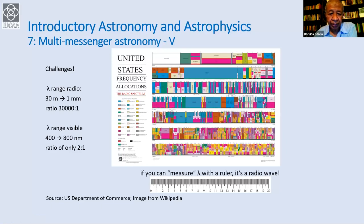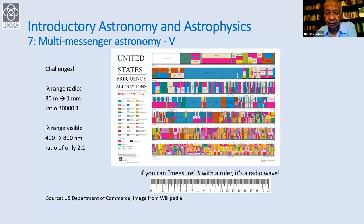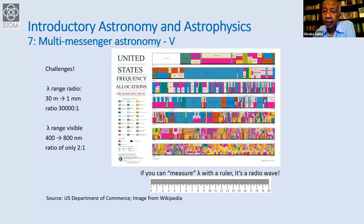This United States frequency allocations chart shows that almost everything is filled up for a variety of needs. However, certain frequencies are exclusively reserved for radio astronomy — for example, the very important 21-centimeter line, which is a spin-flip transition of neutral atomic hydrogen. Others cannot transmit at these frequencies. As a simple mnemonic: if you can measure the wavelength with a ruler, it's a radio wave — long wavelengths mean low frequencies, and low frequencies mean low energy, E = hν.